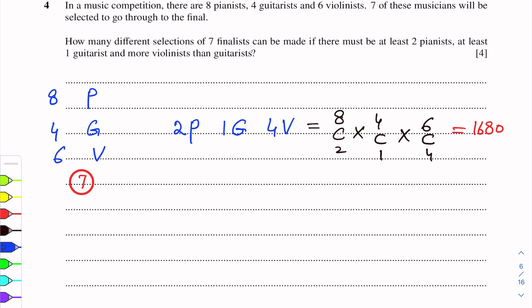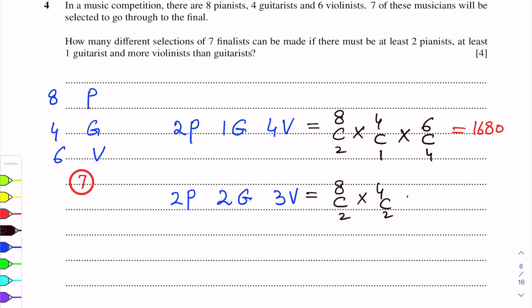Next option is: 2 pianists, 2 guitarists, 3 violinists. All three restrictions are satisfied here — 2 pianists, 2 guitarists, and violinists (3) are more than guitarists (2). So we write 8C2 × 4C2 × 6C3, and after calculating we get 3360.